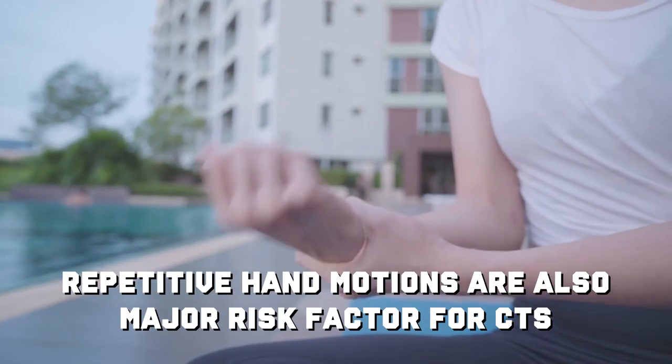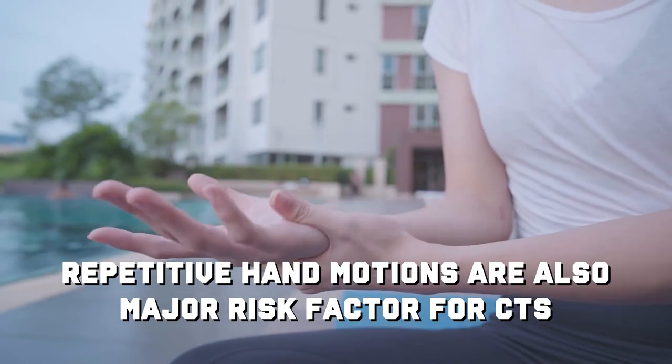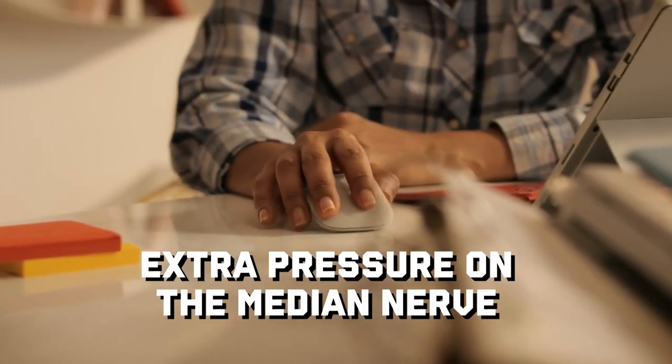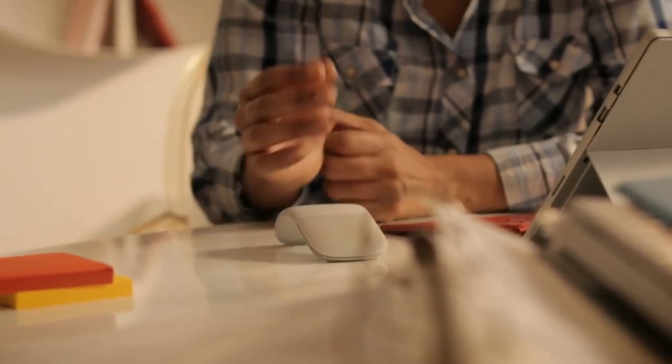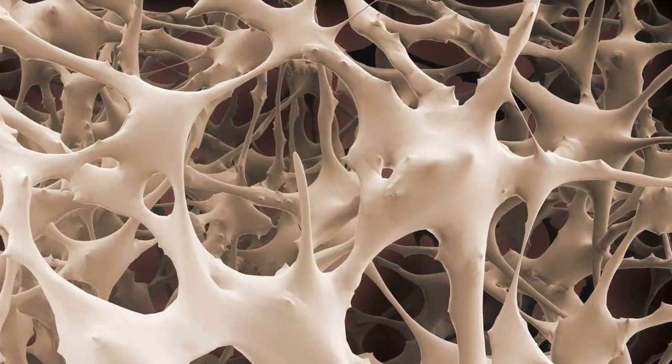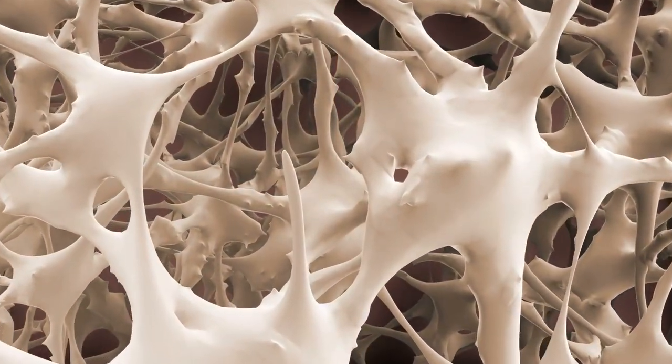As it turns out, repetitive hand motions are also major risk factors for CTS. Keyboard warriors, gamers, or even folks who clean for hours, all that movement can put extra pressure on the median nerve, leading to the tingles and numbness we know and not so love. Body composition can also play a role here. More tissues around the nerve means more potential for squishing.